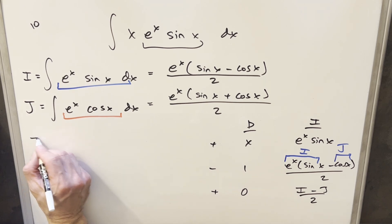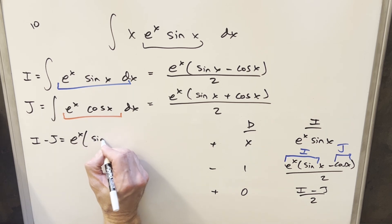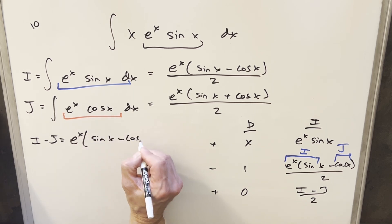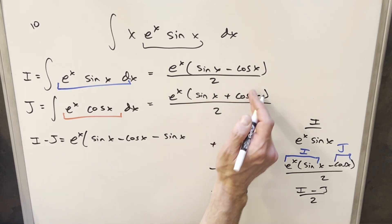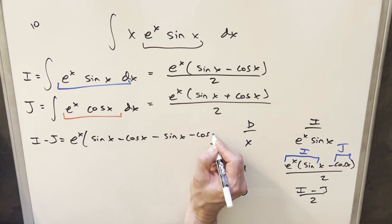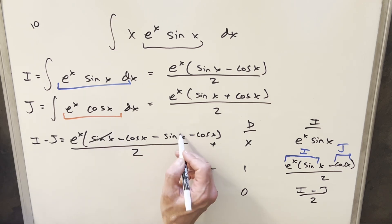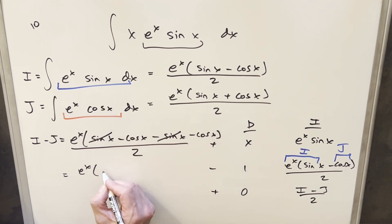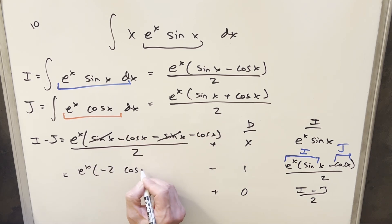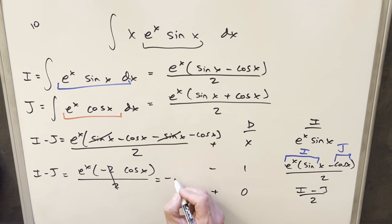Let's just work out what i minus j is going to be. We have e to the x in both, so we'll factor out an e to the x. From i we have sine x minus cos x, and subtracting j we'll distribute in a minus sign: minus sine x, minus cosine x. We have the same denominator, so this is all over 2. Sine minus sine cancels. Re-writing, we have e to the x up front, and minus cos x minus cos x is minus 2 cosine x, all over 2. The 2's cancel, so this just gives us minus e to the x cosine x.